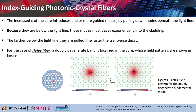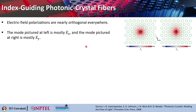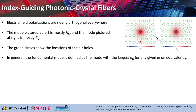The increased permittivity of the core introduces one or more guided modes by pulling modes down beneath the light line. Because they are below the light line, these modes must decay exponentially into the cladding. The further below the light line they are pulled, the faster the decay will be. For the case of a holey fiber, a doubly degenerate band is localized in the core — you can have polarization along x or y, giving Ex or Ey. This is how the field pattern looks, and we call this the fundamental mode because it shows a circular kind of pattern with electric field polarizations nearly orthogonal everywhere.